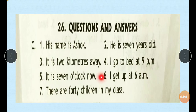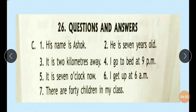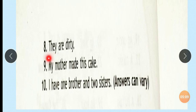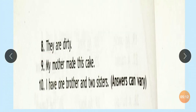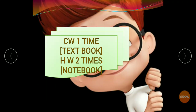Let's see the answers. His name is Ashok. He is 7 years old. It is 2 kilometers away. I go to bed at 9 PM. It is 7 o'clock now. I get up at 6 AM. There are 40 children in my class. They are dirty — if you played outside, hands are dirty; if you stayed home and did nothing, hands are clean. My mother made this cake. I have one brother and two sisters. CW: one time in your textbook. HW: two times in your notebook. Thank you.